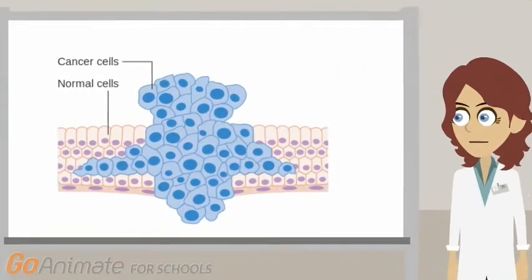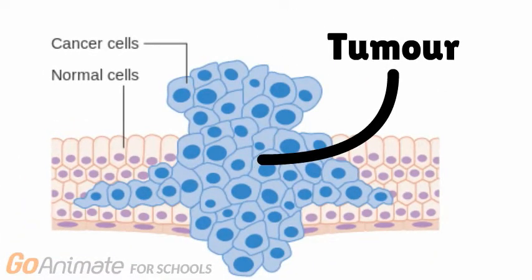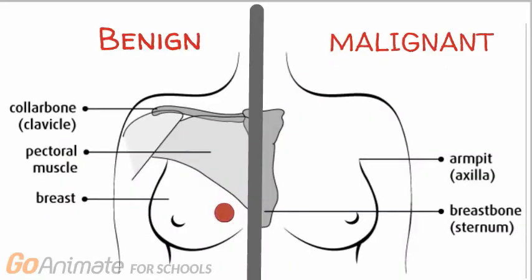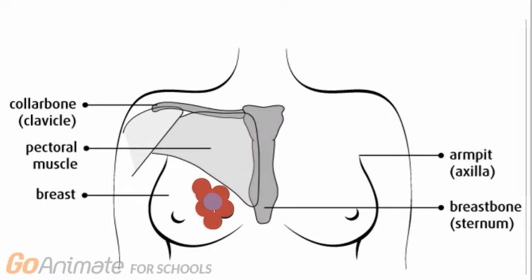A buildup of abnormal cells often forms a mass of tissue called a lump or a tumor. There are two types of tumors: benign tumors, which do not spread to other parts of the body, and malignant tumors, which are aggressive, as they can invade and damage surrounding tissue. There is also a hormone called estrogen, which can be made by fat cells in your body. If this binds to abnormal cells, the cancer can progress and grow.